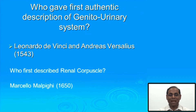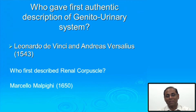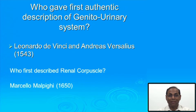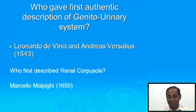Who gave the first authentic description of the genitourinary system? None other than Leonardo da Vinci and Andreas Vesalius in 1543. Who described the renal corpuscle? Many of you know, because earlier these renal corpuscles were described as Malpighian corpuscles under the name of Marcello Malpighi, an Italian physician.